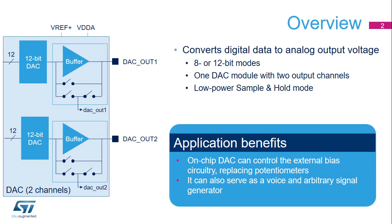The STM32L5 Digital to Analog Converter converts 8 or 12-bit digital data to an analog voltage. The DAC module has two converters that can work synchronously or asynchronously. A low power sample and hold mode is also integrated. The DAC can interface with external potentiometers or bias circuitry, and it can also create voice and arbitrary signals.